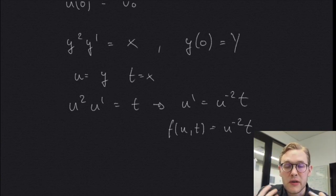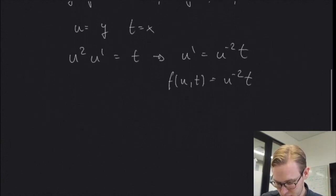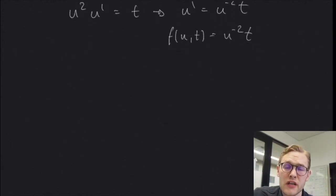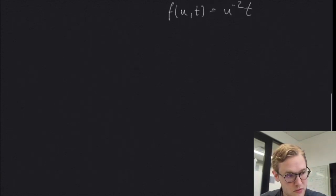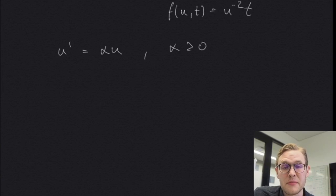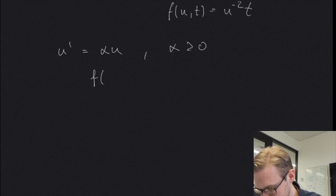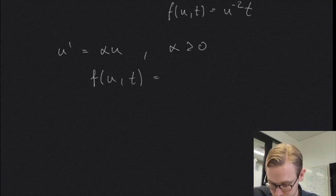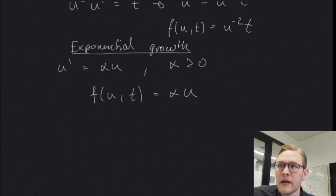And we can usually model all sorts of phenomena in this way. For instance, the equation governing the exponential growth of money in a bank account, or a population of animals or bacteria with infinite resources would be something like this. Where alpha is larger than zero is some given constant representing the growth rate. And here we also have a simple right hand side expression, f of u and t equal to alpha u, exponential growth.